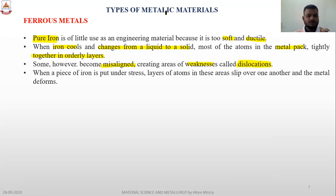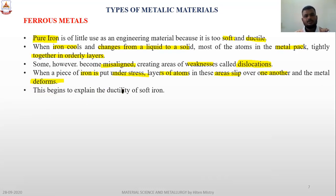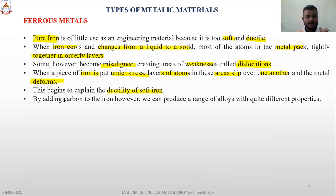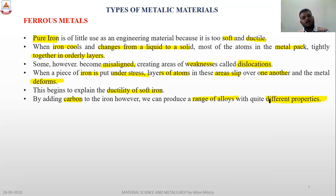When a piece of iron is put under stress, the layers of atoms slip over one another, causing deformation. This explains the ductility of soft iron. By adding carbon to iron, we can produce a range of alloys with quite different properties. In the pure form of iron, by adding various percentages of carbon, we can obtain different materials.